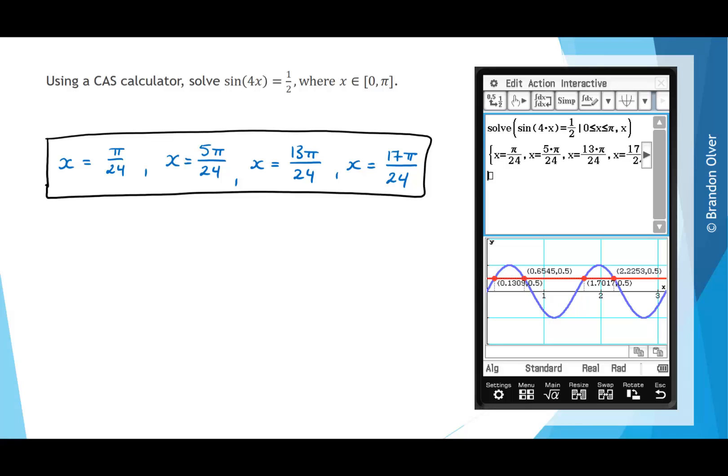Just for our interest, the decimal solutions were x = 0.13, x = 0.65, x = 1.70, and x = 2.23.